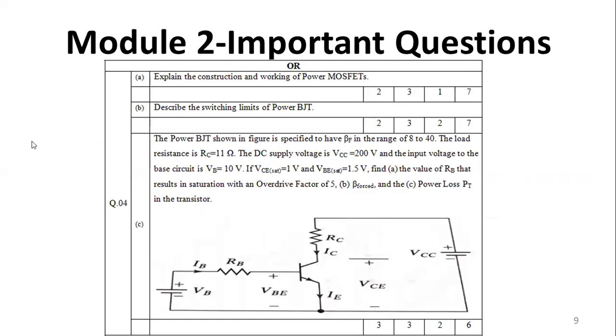Another important question is explain the construction working of power MOSFET. Then describe the switching limits of power BJT. You have to mention about the switching limit. You have to talk about how BJT is known as current control device and what is the frequency limits. Everything should be BJT is not suitable for high frequency application.